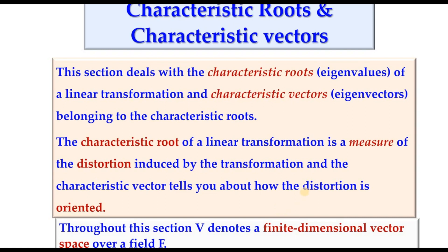We are going to deal with the characteristic roots and characteristic vectors. The characteristic root of a linear transformation is a measure of the distortion induced by the transformation, and the characteristic vector tells you about how the distortion is oriented. Throughout this section, capital V denotes a finite dimensional vector space over a field F.